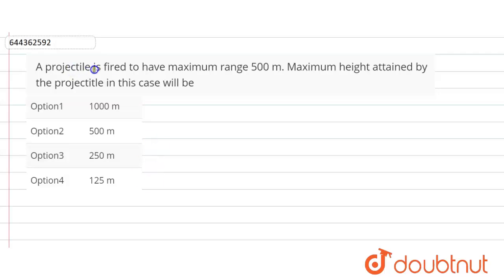Hello friends, the question is given here: a projectile is fired to have maximum range 500 meters. Maximum height attained by the projectile in this case will be? So here, given maximum range R max is equal to 500 meters.